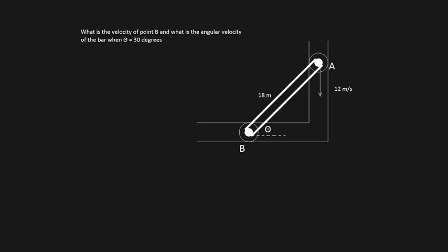In this video I'll be covering a quite challenging, yet also fairly simple relative motion problem. We've got a bar of 18 meters in length connected by rollers A and B, where A is constrained to move downwards and B is constrained to move in the horizontal direction. We need to find the velocity of B and the angular velocity of the bar.